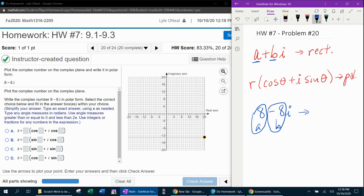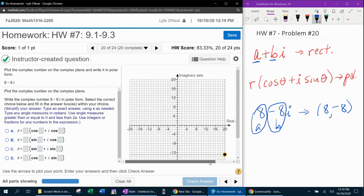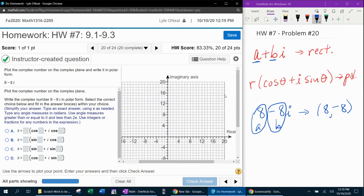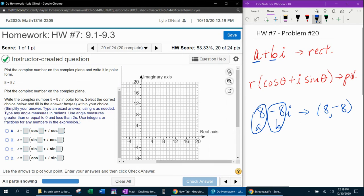To plot that in the complex plane, you plot that as if it was the ordered pair 8, negative 8, like an X and a Y. So here we go. Let's see if we can put the dot in the right spot. And if this is too small, you can zoom in. And you can zoom in again as much as you need to so that you can see clearly. And I'm going to do that one more time.